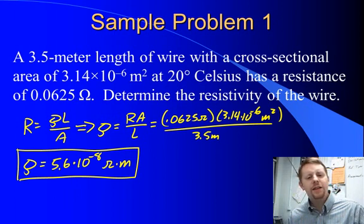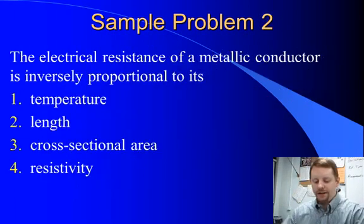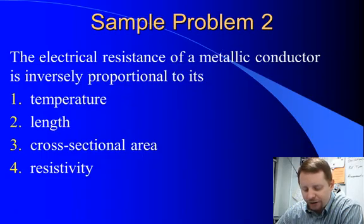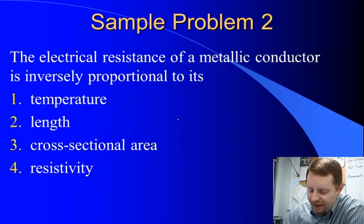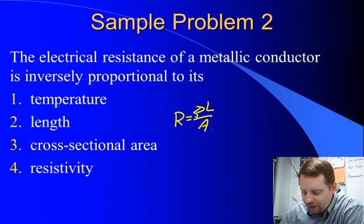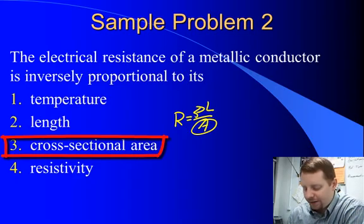Let's take a look at another one. It's a little bit more qualitative. The electrical resistance of a metallic conductor is inversely proportional to its... Well, my guide to thinking here, if I'm looking for electrical resistance of a conductor, is R equals rho L over A. So which one of these is going to be inversely proportional? Well, if we can find something relating to area, like number 3, cross-sectional area. There we go. That must be our answer.